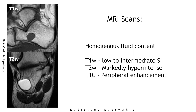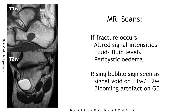MRI of the lesion demonstrates fluid content, which is homogeneous low to intermediate signal intensity on T1 and markedly hyperintense on T2. Contrast-enhanced T1 images show peripheral enhancement. This can be altered by fracture causing hemorrhage into the cyst, producing fluid-fluid levels and pericystic edema. The rising bubble sign represents a locule of gas or vacuum phenomenon in the non-dependent part, seen as signal void on T1 and T2 and as a blooming artifact on gradient echo.